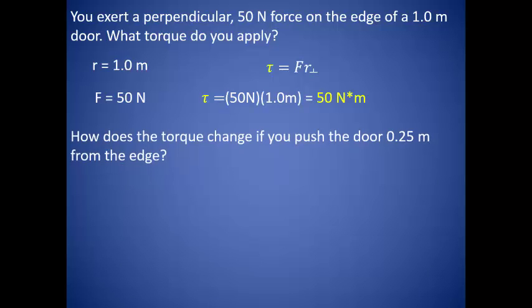But what if we don't apply the force to the edge of the door? What if we apply a force a quarter meter from the edge? This makes our lever arm a length of 0.75 meters instead of a full meter. This changes our torque to 38 newton meters. This tells us that you can achieve more torque just by increasing the lever arm.